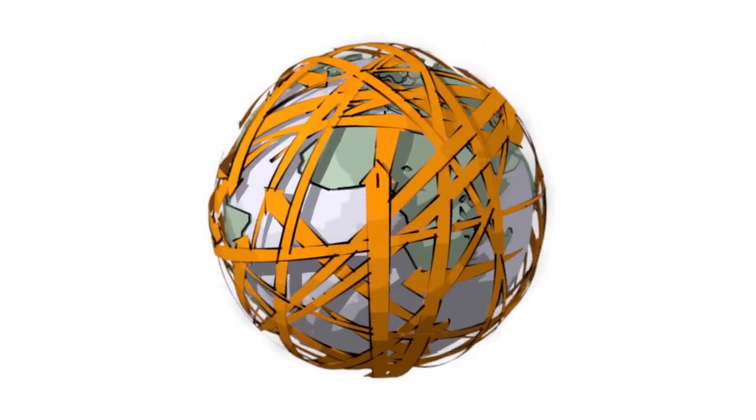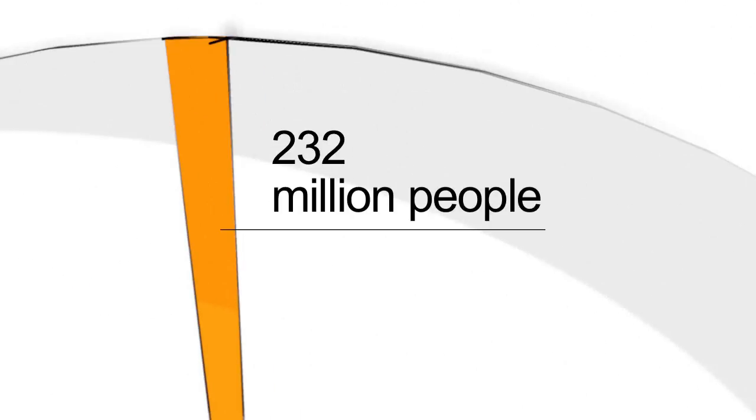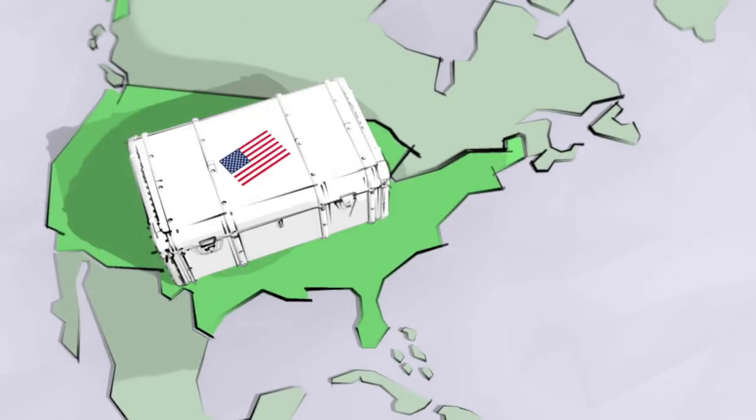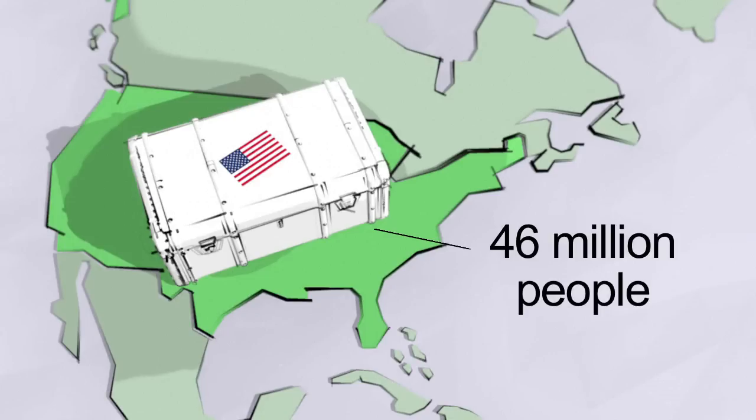Currently, 3.2% of the global population, or 232 million people, are considered to be migrants. The United States as a country has the largest number of migrants, hosting 46 million, or 20% of the world's total migrant population.